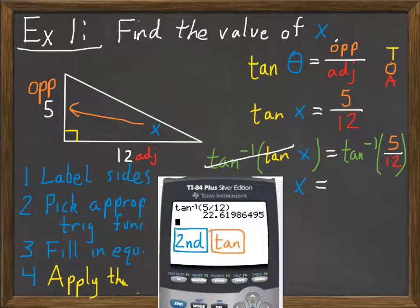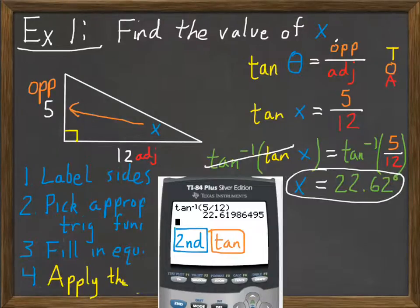If I clear off a little room here, you use the calculator, type in second then tangent to get tangent inverse, and then type 5 over 12. In this case, that gives me a value of 22.62 degrees. So my angle in that triangle is 22.62 degrees. This also tells me the measure of the other angle because I know the angles in the triangle have to add up to 180, or since it's a right triangle, the two remaining angles have to add up to 90.